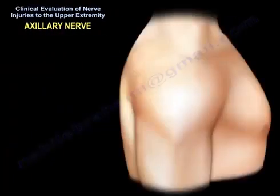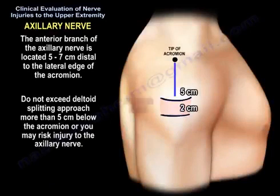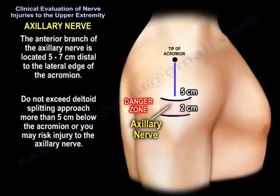The anterior branch of the axillary nerve is located five to seven centimeters distal to the lateral edge of the acromion. Do not exceed a deltoid splitting approach more than five centimeters below the acromion, or you may risk injury to the axillary nerve.